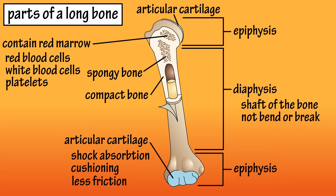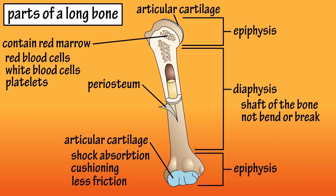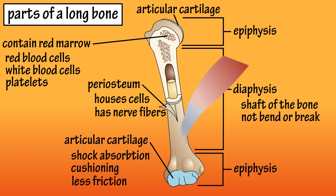There is a thin fibrous membrane called periosteum that covers the entire bone surface except where the articular cartilage is. This membrane allows for attachment of ligaments and muscle tendons, and houses cells that are important in bone formation and repairing bone tissue. The periosteum has many nerve fibers, so it can be very painful when bruised.